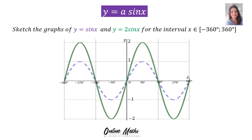Let's look at the effect of A. We find A in front of the function name. The question says: sketch the graphs of y = sin x and y = 2 sin x for the interval x is an element of minus 360 up to 360. Already sketched for you, the purple graph is y = sin x and the green graph is y = 2 sin x. On the purple graph, the original graph y = sin x, the number in front of sin is an invisible one.